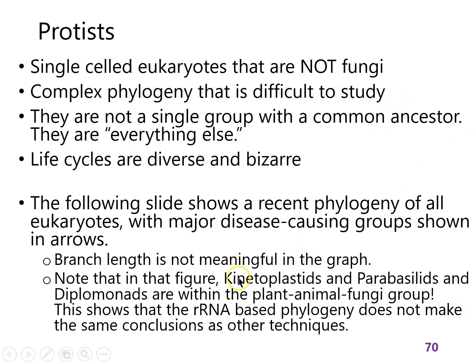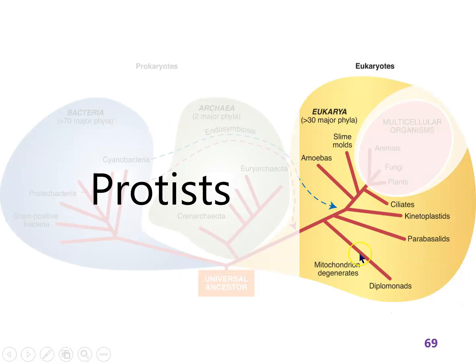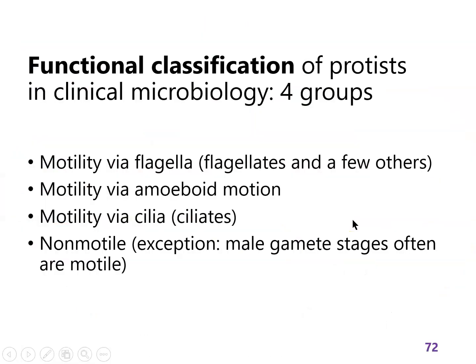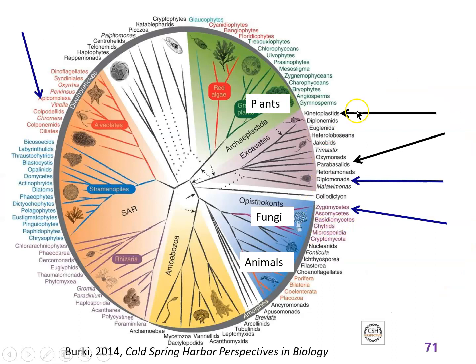In particular, kinetoplastids, parabacillids, and diplomonads are all very long, deep branches. I've pointed those out on this phylogeny and we will compare that in a little bit.